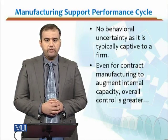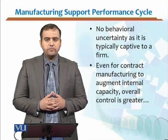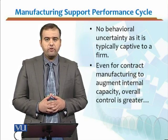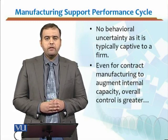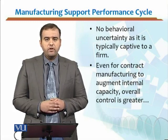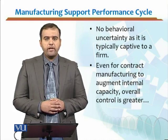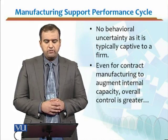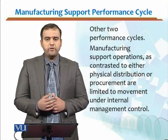When you outsource your manufacturing to some other organization — let's say I have the total capacity of 2,000 units and the orders confirmed for this month are 2,200 units — I need to actually outsource 200 units. To augment my internal capacity, I would go for contract manufacturing, outsourcing it to some other organization. Even for that scenario, the overall control is actually greater than the other two performance cycles.